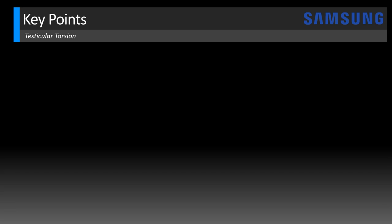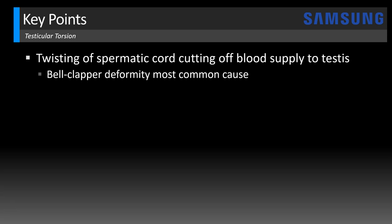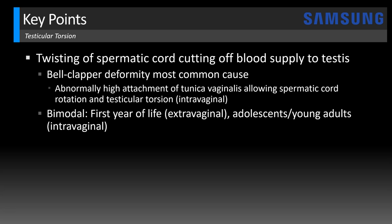Now let's review some key points for testicular torsion. Torsion occurs when there's a twisting of the spermatic cord cutting off the blood supply to the testis. The most common cause is a bell clapper deformity, which occurs when there's an abnormally high attachment of the tunica vaginalis allowing the spermatic cord to rotate 360 degrees or more — this is known as intravaginal torsion. Torsion has a bimodal distribution: most commonly in the first year of life due to an extravaginal cause, and then later in adolescence and young adults due to this intravaginal cause.